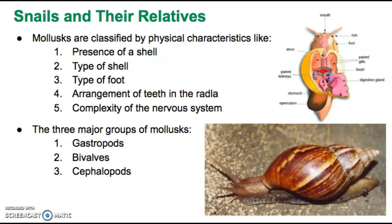Mollusks are classified by physical characteristics such as the presence of a shell — most have one, but a few don't. The type of shell a mollusk possesses, the type of foot it has, the arrangement of teeth on a radula or even the presence of a radula altogether, and the complexity of the nervous system are all classification criteria. Some mollusks have a very complex nervous system and are super smart — smarter than most animals we observe in nature. Others, not so much.